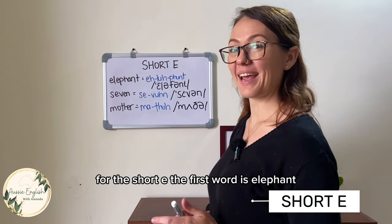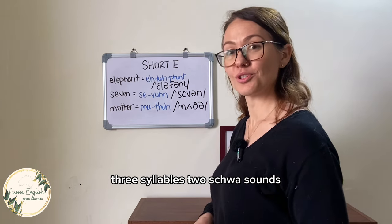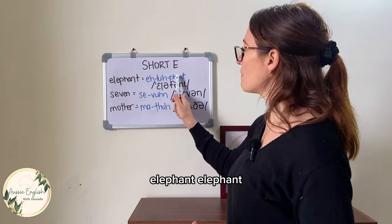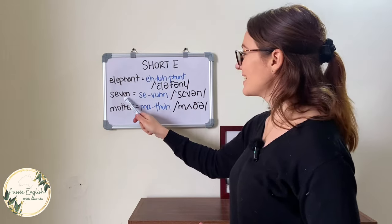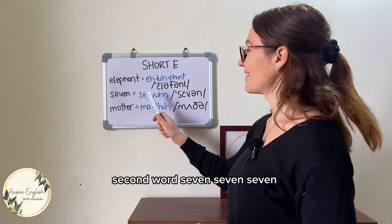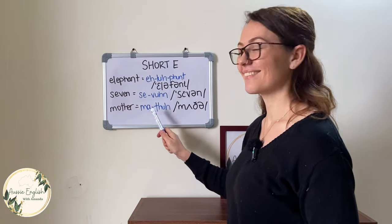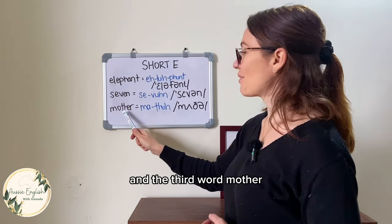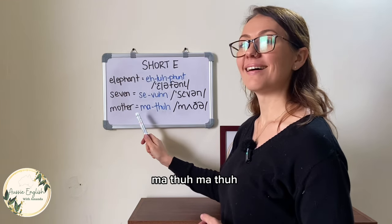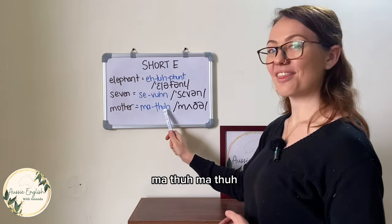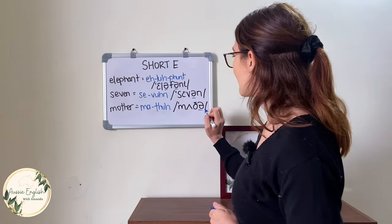For the short E, the first word is 'elephant' — three syllables, two schwa sounds: el-uh-funt. The second word is 'seven' — sev-un. And the third word is 'mother' — muth-uh. So we have schwa sounds replacing the short E in all of these.